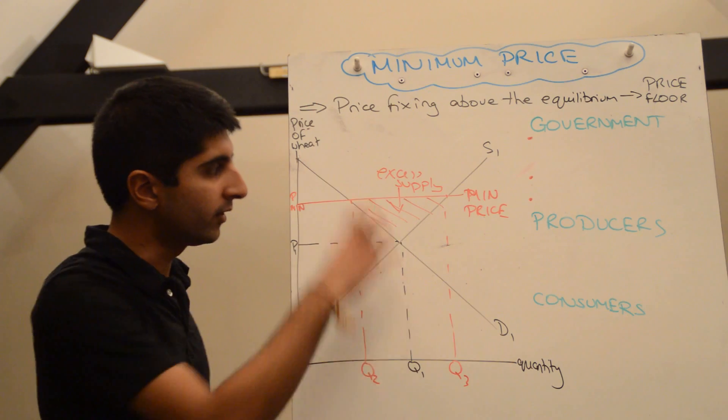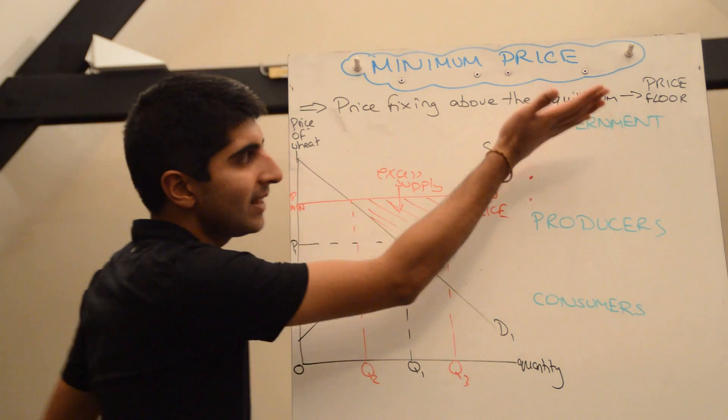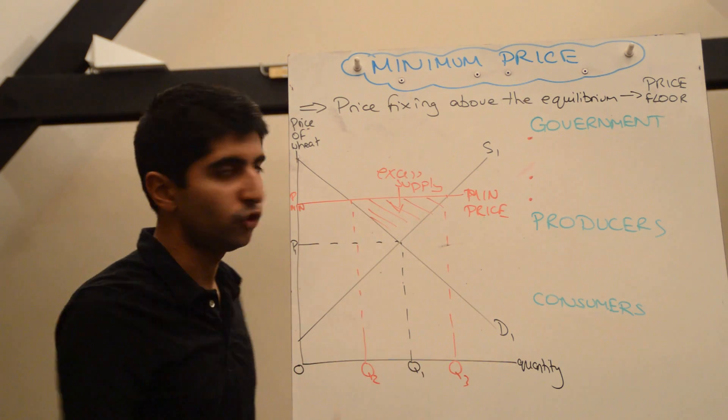But anyway, back to the wheat example here, there is an excess supply with supply more than demand. Let's now analyze the impacts on stakeholders: on the government, on producers and consumers.